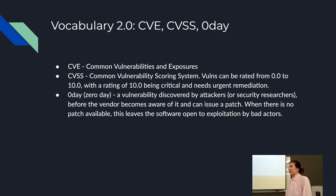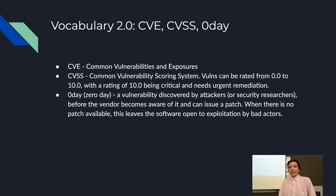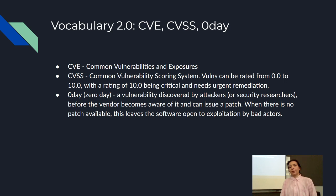Vulnerabilities are usually rated from 0.0, which is low, to 10.0, which is considered critical. If you're working for a company and a vulnerability is reported that's upwards of eight, it's kind of an all-hands-on-deck situation and needs to be patched immediately.